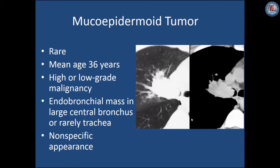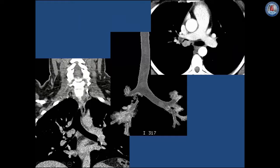Mucoepidermoid tumor is a rare tumor generally seen in younger patients with a mean age of 36 years. It can be high-grade or low-grade malignancy and usually presents as an endobronchial mass in the large central airways, rarely in the trachea. It has a non-specific appearance and is difficult to differentiate from other carcinomas. In this patient, a polypoid mucoepidermoid carcinoma at the level of the carina extending into the right main bronchus causes significant airway obstruction with no local invasion.